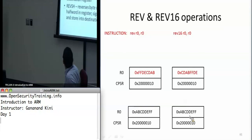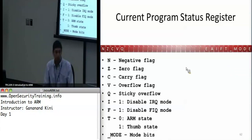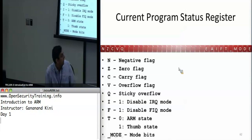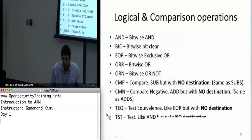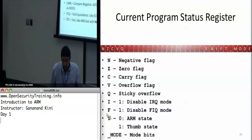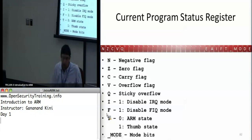I've put the current program status register diagram in here again for your reference, showing the flags. The reason I've included it is for the logical operations, which come next — so people can look it up.